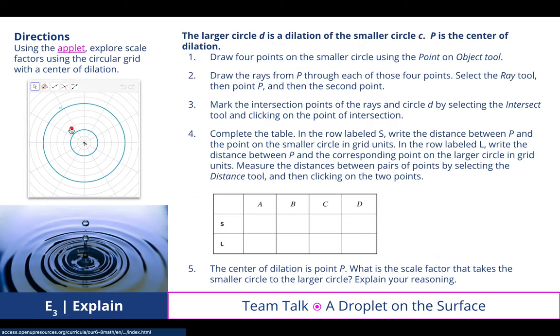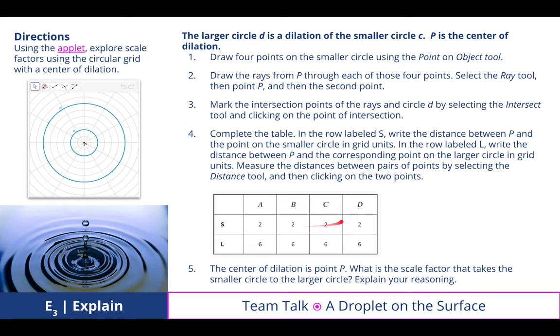A great applet to use here explores scale factors using that circular grid with the center of dilation of point P. We engaged in this activity and found that the measurements for A, B, C, and D all were 2 and 6 respectively. Draw four points on the smaller circle using the point tool. Draw the rays from point P through each of those four points. Mark the intersection points of the rays and circle D, and then complete this table, which we did.